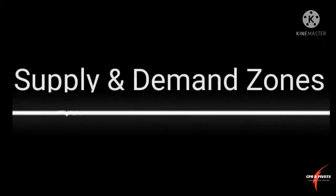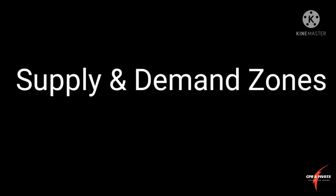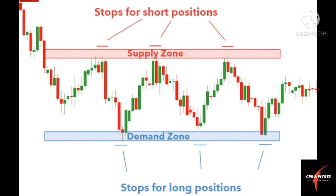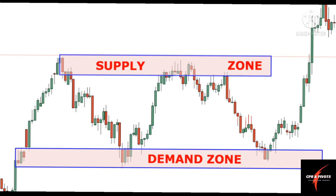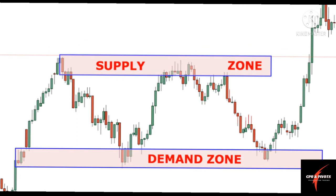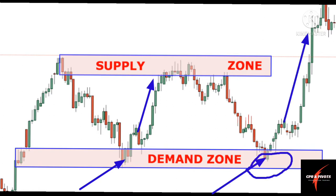Moving on to the next point — what is the supply and demand zone on the chart, and why are these levels so important? The supply zone is the point from where the market crashes suddenly, so it acts like a supply zone for the next day. When the market goes to that level the next day, it faces strong resistance. The demand zone is the point from where there is a sudden rise in the market — it acts like a strong support when the market revisits that level.